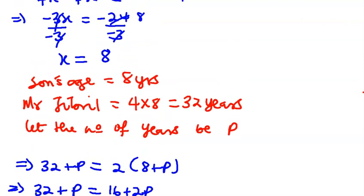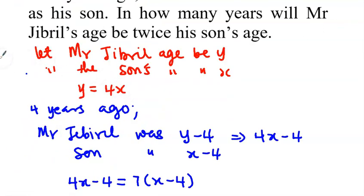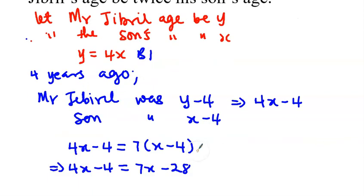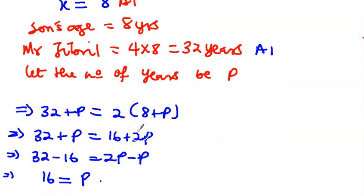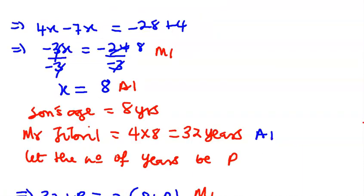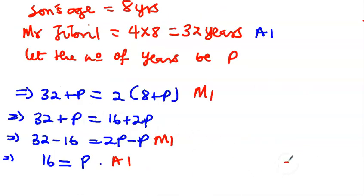Let's see how the scoring was done. Being able to express that the father Mr. Jabril is four times, you get b1. And then setting up the equation like this, you get m1. For solving, you get another m1, and the final answer is a1. Now finding Mr. Jabril's age is a1. Then setting up the equation for the future scenario, you're going to get m1. For solving, you get another m1, and then final answer a1. So in all, we have a total of eight marks.